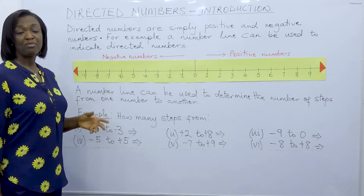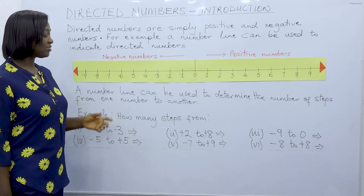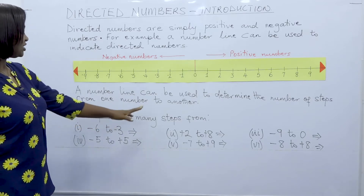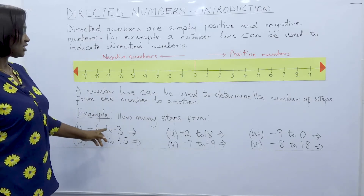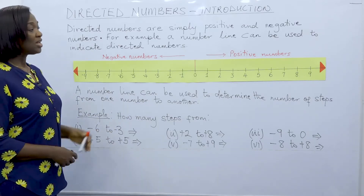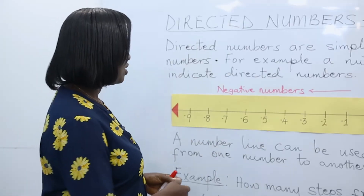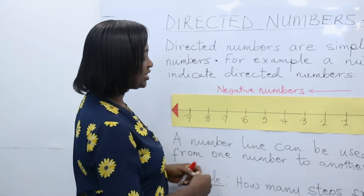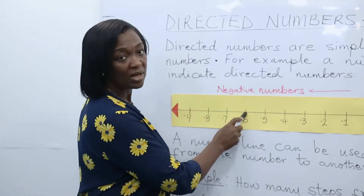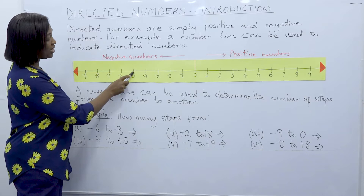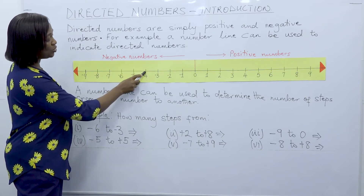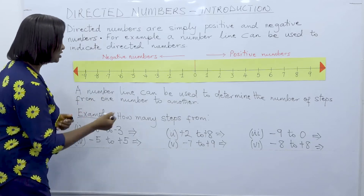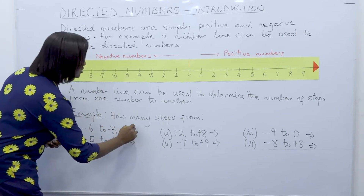A number line can be used to determine the number of steps from one number to another. For example, how many steps from minus six to minus three? Let's look at the number line — this is minus six to minus three. Counting together: one, two, three. There are three steps from minus six to minus three.